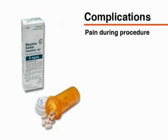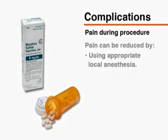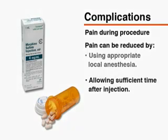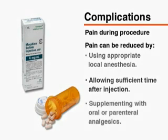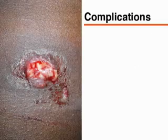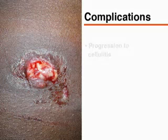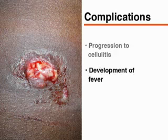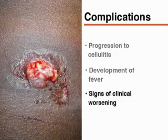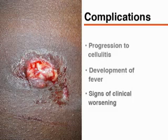The acidic environment of infected tissue leads to difficulties with adequate anesthesia provided by local anesthetic agents. Using appropriate amounts of anesthetic, allowing sufficient time after injection, or supplementing with oral and parenteral agents can increase patient comfort. Additional complications to watch for include the progression to surrounding cellulitis, development of a fever, or other signs of clinical worsening. These may prompt consideration for repeat incision and drainage or the need for antibiotic therapy. Most abscesses will respond well to simple incision and drainage and will not require treatment beyond packing changes and local wound care practices.